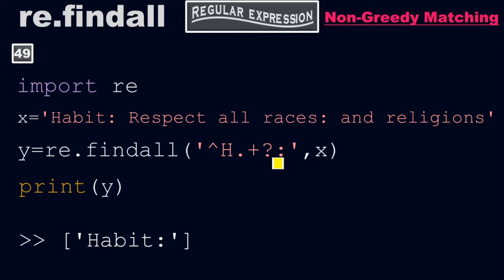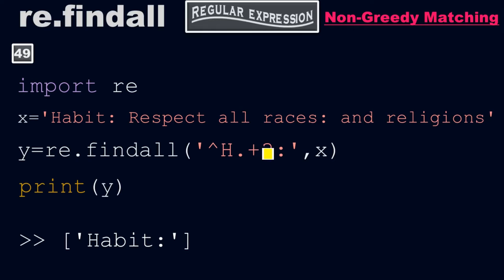Now look at here. We have the caret (^), which is the beginning of the line, and then dot, which matches any character, and then plus, which means one or more occurrences, and then the question mark, which makes it non-greedy. And then the last thing is the colon.